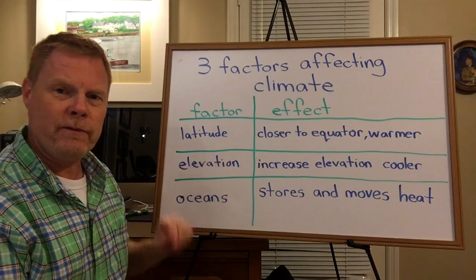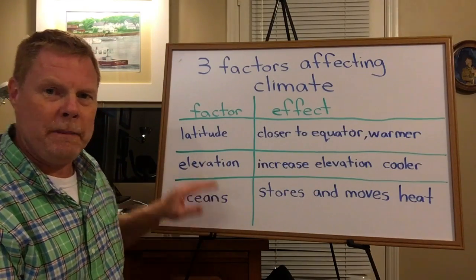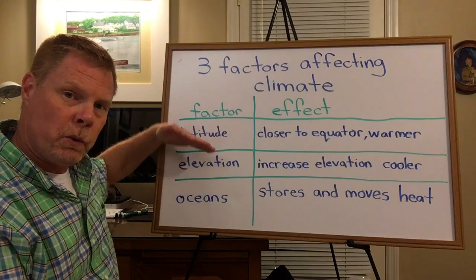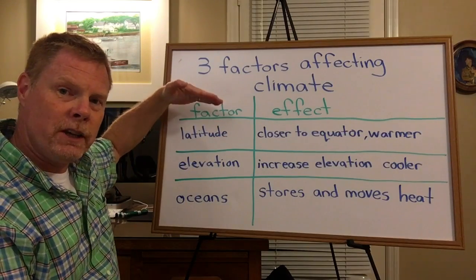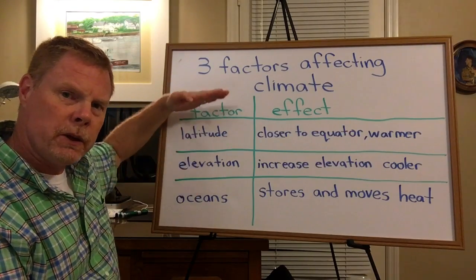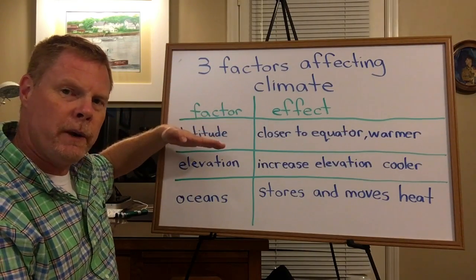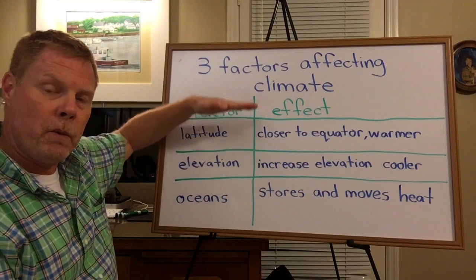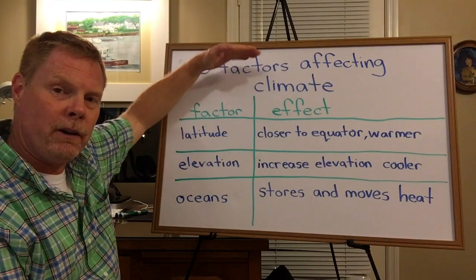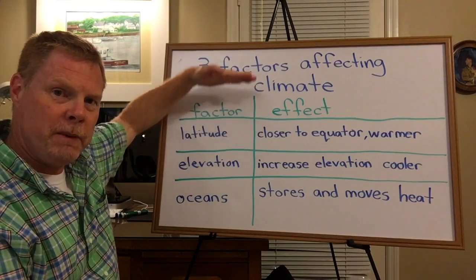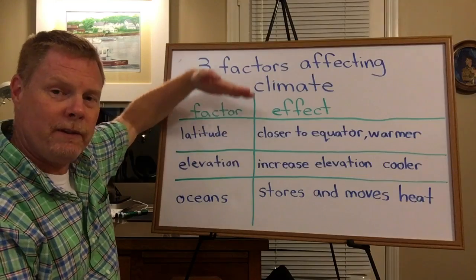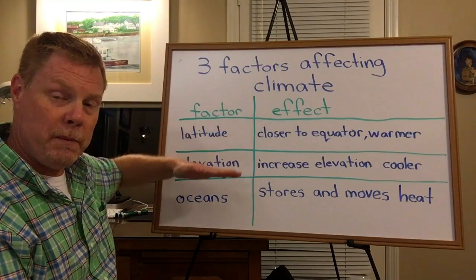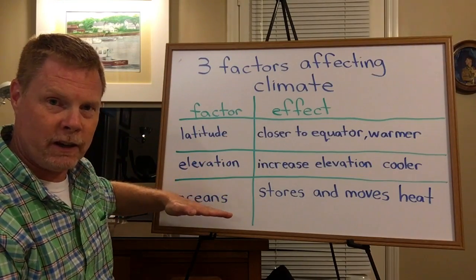The first factor that affects an area's climate is its latitude, or how close or far away to the equator that location is. The closer to the equator, the warmer that area is going to be. The further away from the equator, the cooler it will be — whether that's moving north or south down towards Antarctica.